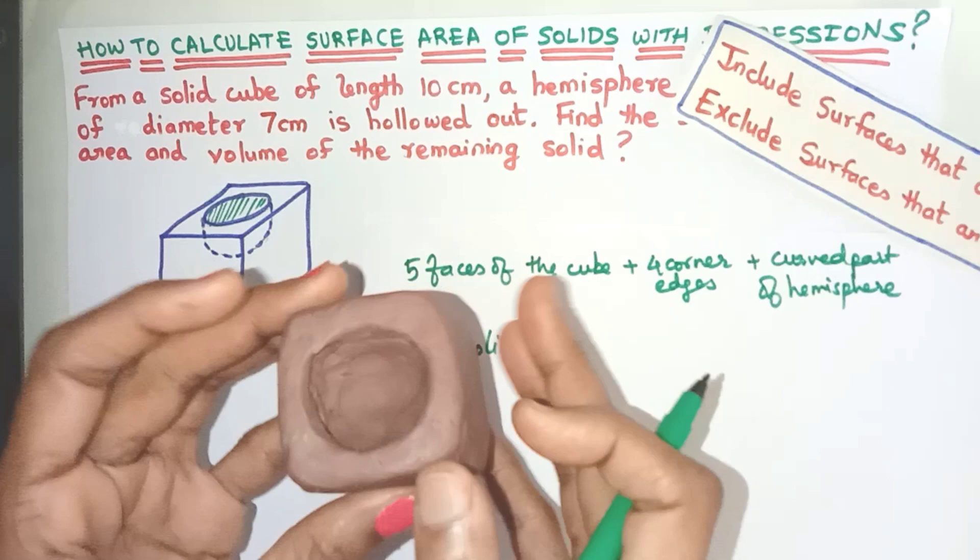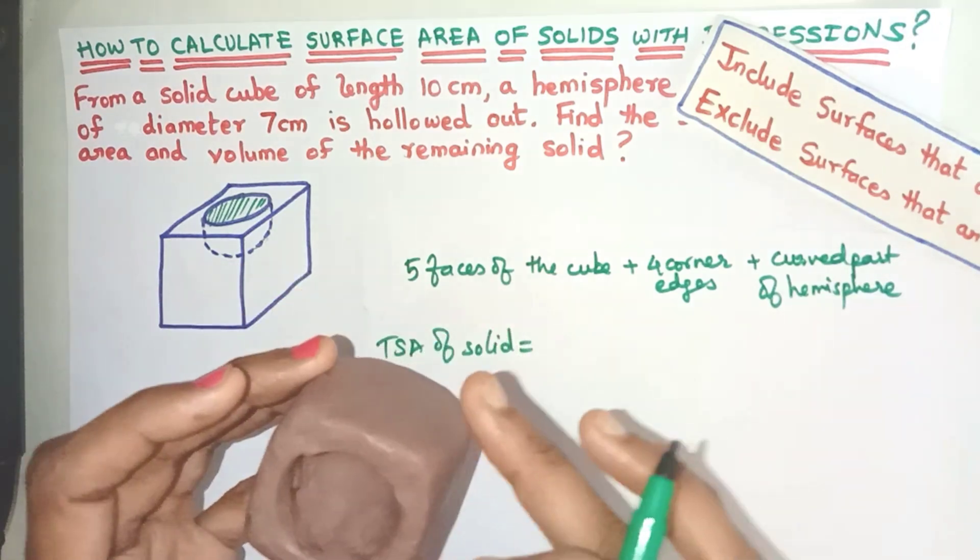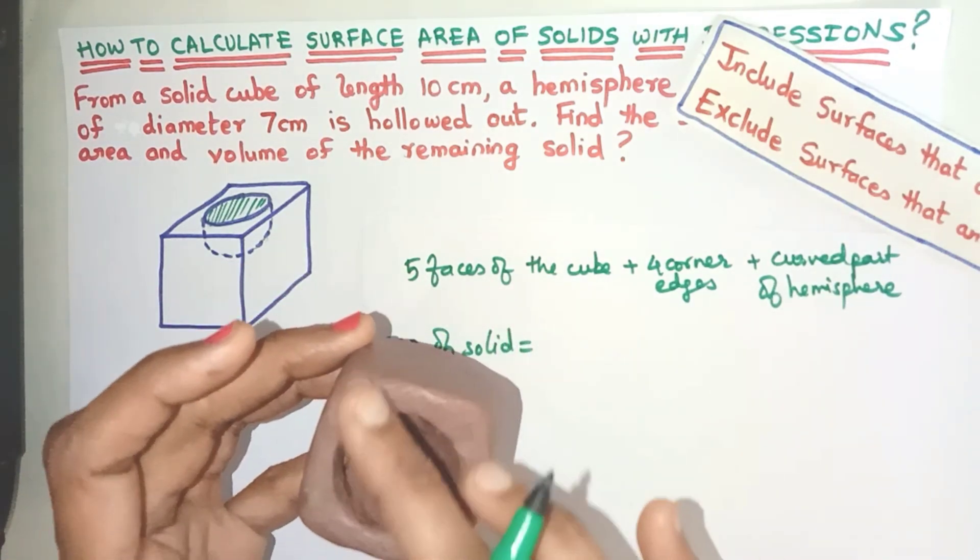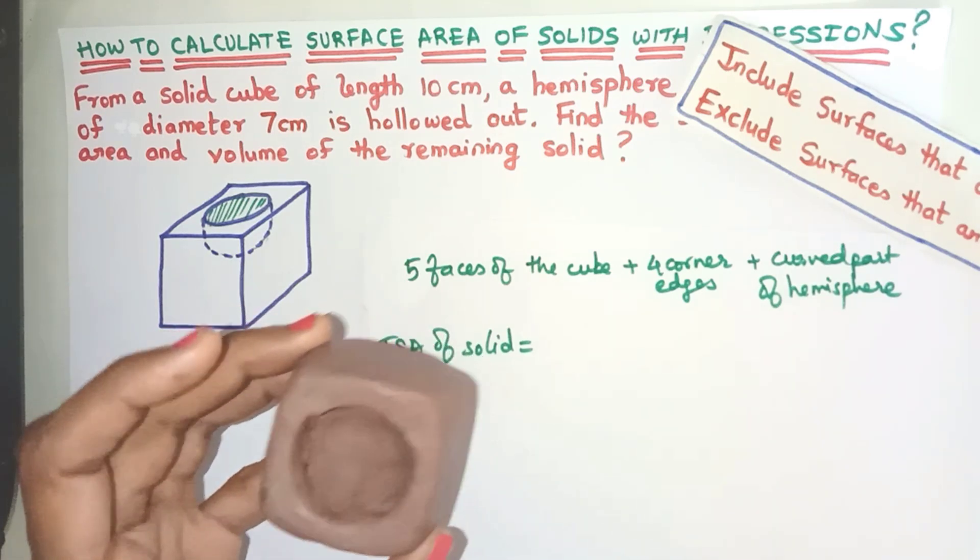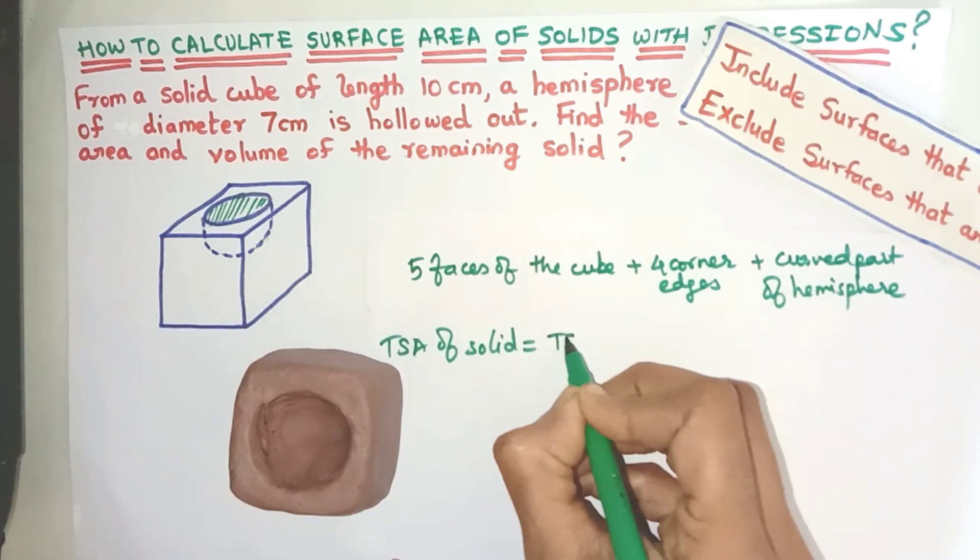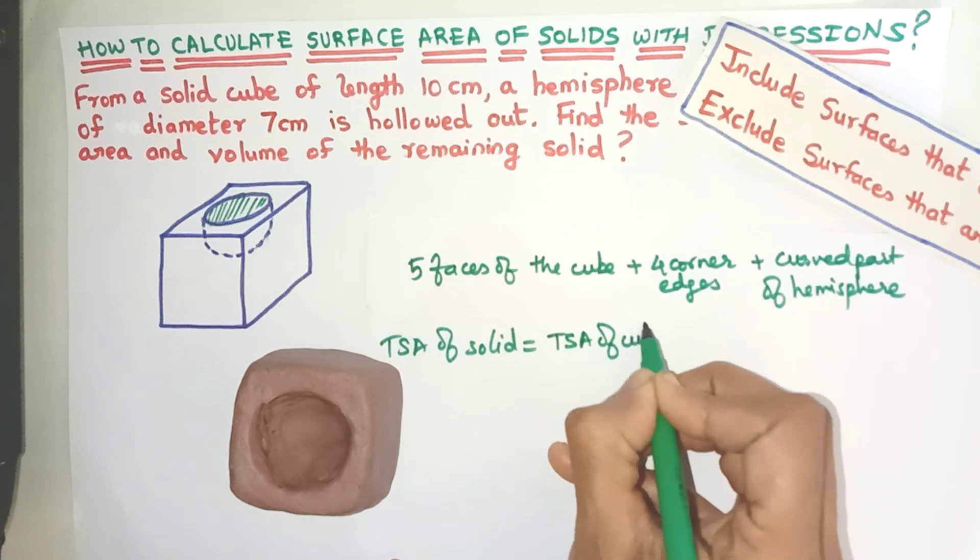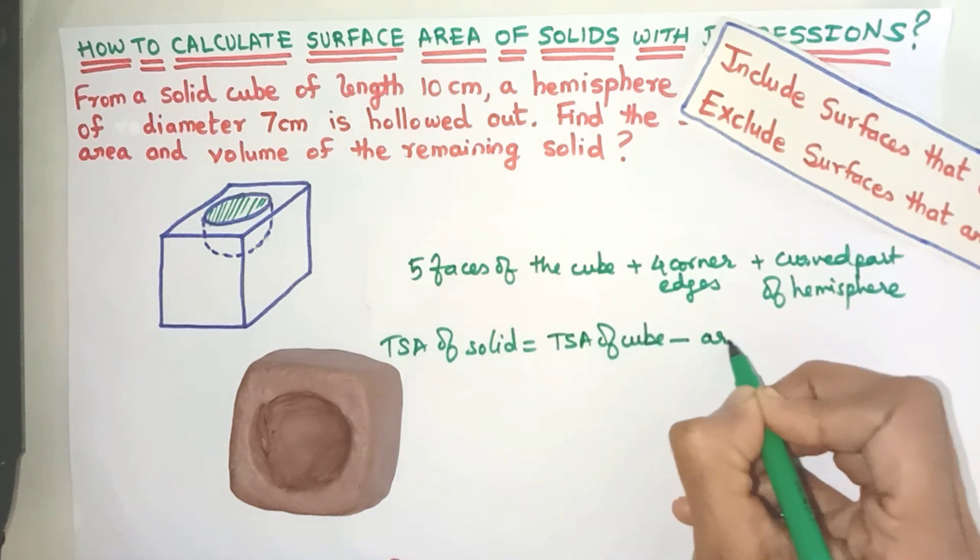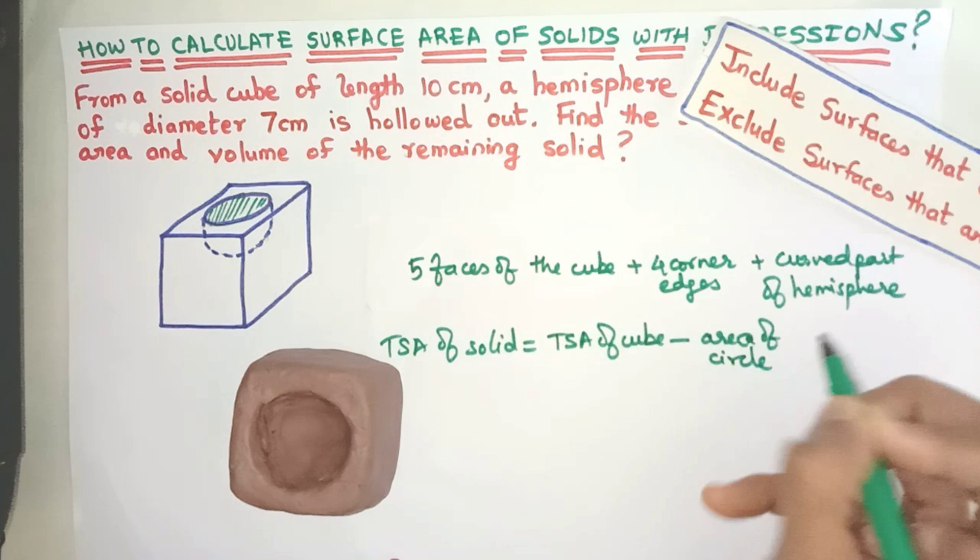So if we subtract, what are we remained with? Yes, the area of the five faces of the cube and the area of these corner places. So let's write here - the TSA of the cube minus the area of the circle.